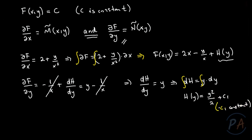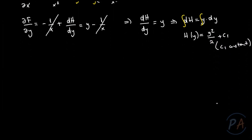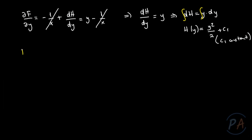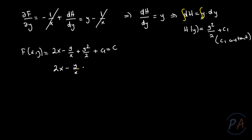The solution F(x,y) can now be written as 2x - y/x + y²/2 + C1 = C. Rearranging: 2x - y/x + y²/2 = C2, where C2 = C - C1. This is the general solution, but we still need to determine C2 using our initial condition.